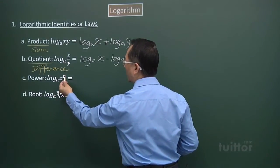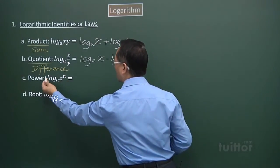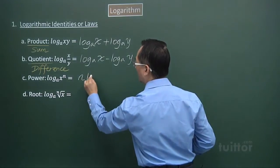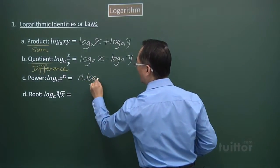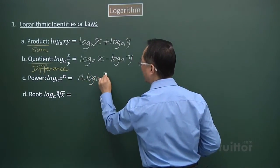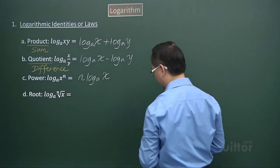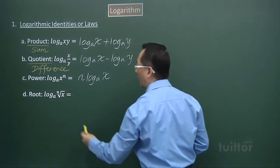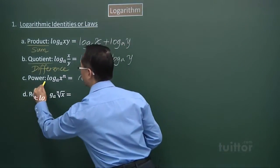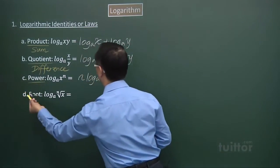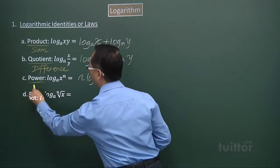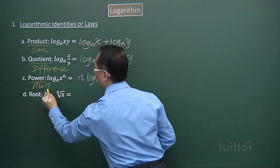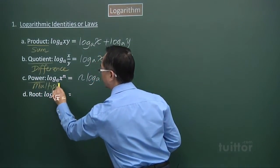Here we have log base a of x to the power of n. What we do is: the index or the power becomes a multiplier. So it becomes n times log base a x. For the power law, we think of the multiplier.